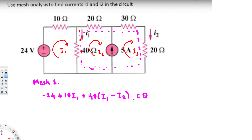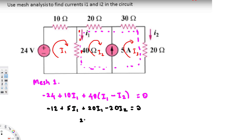Let's simplify this equation. We can divide everything by two: negative 12 plus 5·i1 plus 20·i1 minus 20·i2 equals zero. Adding the i1 terms together gives 25·i1 minus 20·i2 equals 12. This is our first equation.